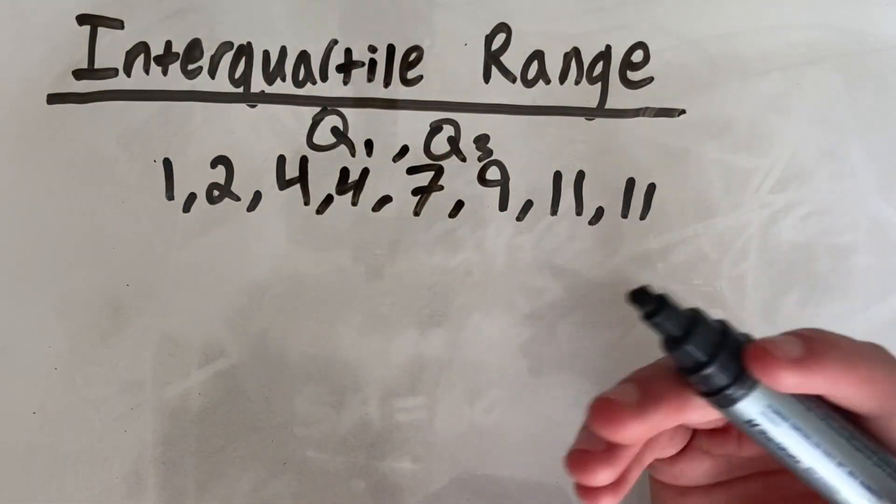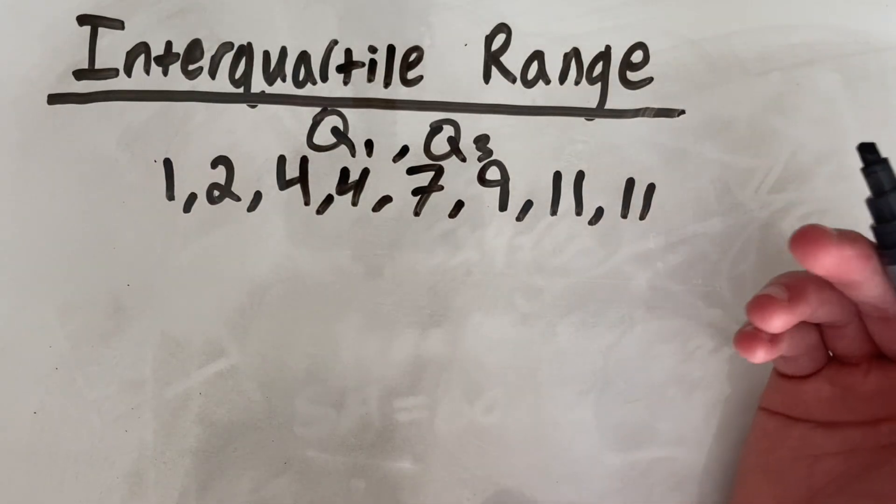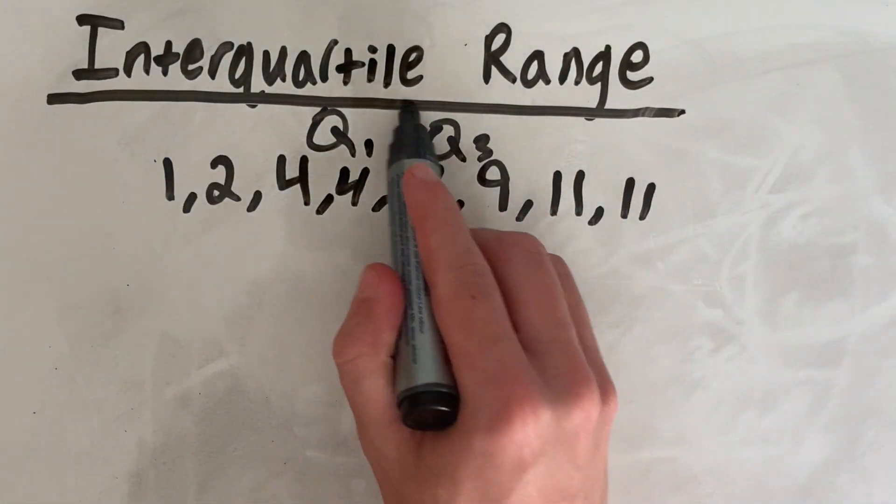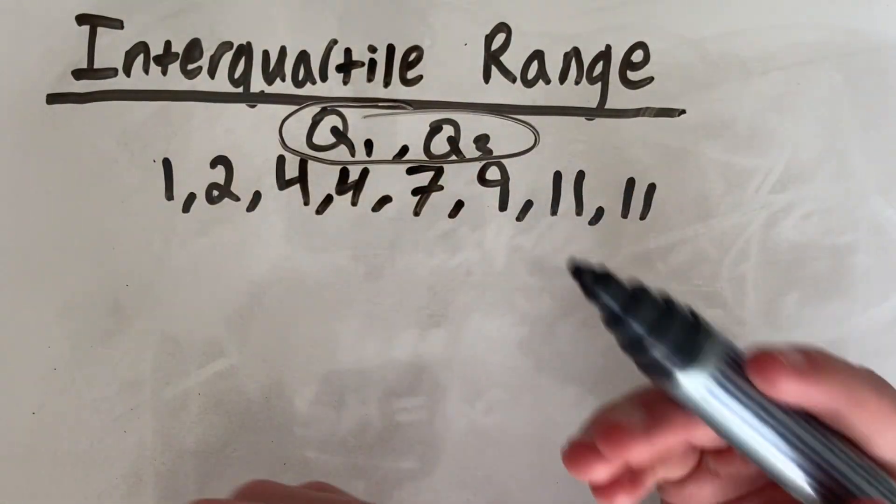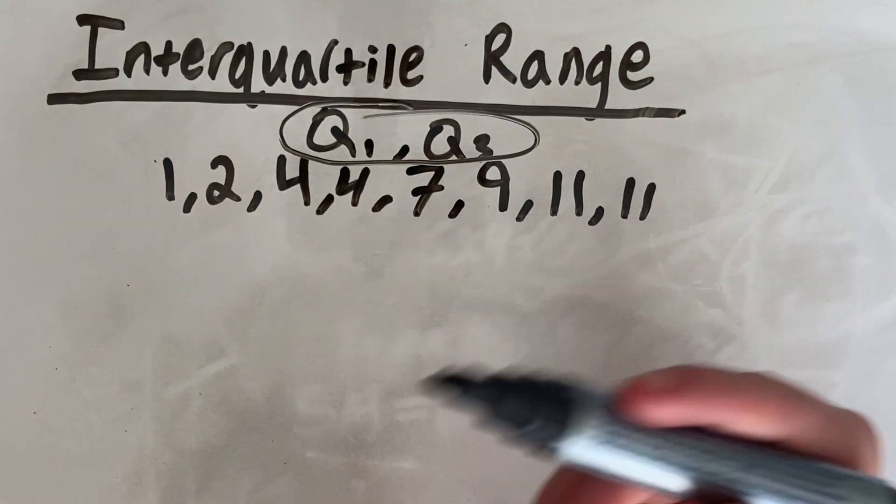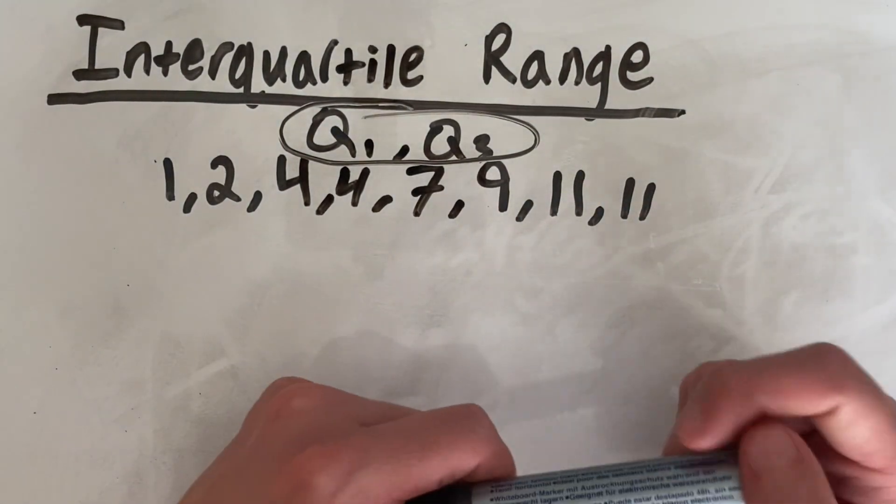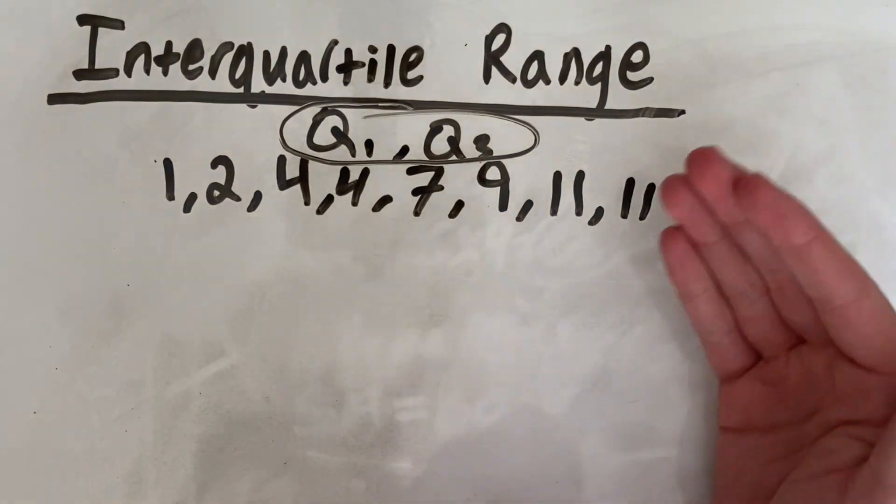The other piece of information you will need is your median, just because in order to get these two quartiles, you first need to get your median. So let's start with that. To get the median, simply find the middle number, because your median is your middle number.